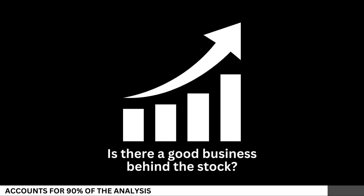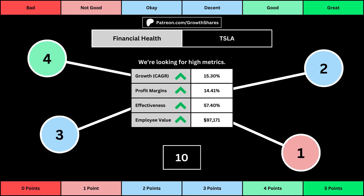We'll look at 14 metrics to determine the business fundamentals. The first set of metrics deal with the company's financial health, with its projected earnings growth for the next five years, its profit margins, its effectiveness, which looks at the company's returns on equity, assets, and invested capital, and then the employee value, which looks at how much value the average employee adds to the business. You can see the values for each of these metrics, as well as the point totals awarded in the bubbles.